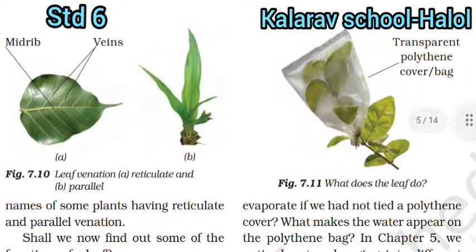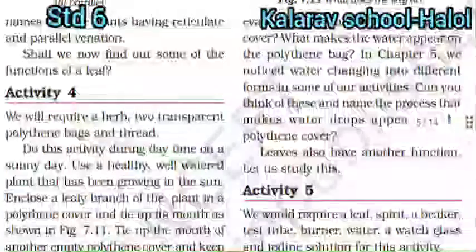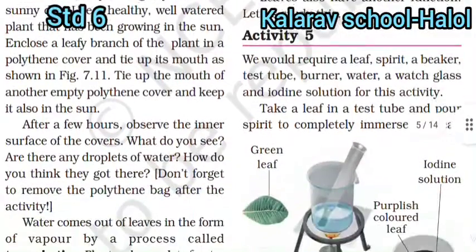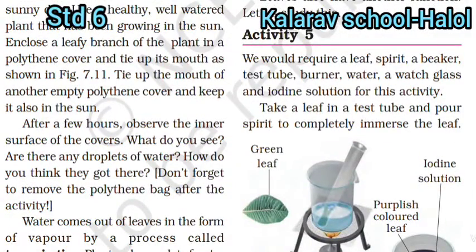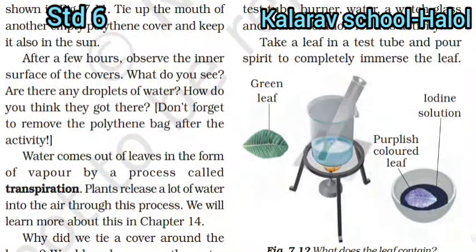Look here — the lines that run side by side are called parallel venation, and the net-like pattern is called reticulate venation. Activities are given so that you can observe leaves by pressing them, and see that leaves also have different types — different colors, some light, some green. Water comes out of leaves in the form of vapour by the process called transpiration. Plants release a lot of water into the air through this process.